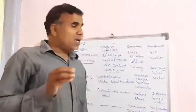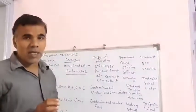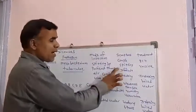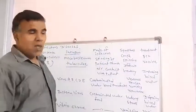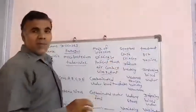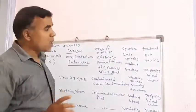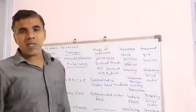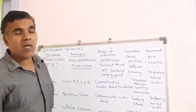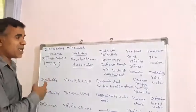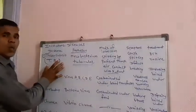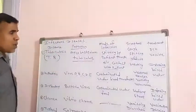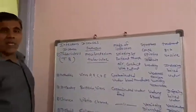The symptoms of TB are: difficulty in breathing, spitting out blood. The treatment is the BCG vaccine — there is a vaccination against TB to cure the disease. So that is the first infectious disease.